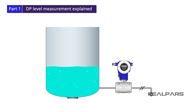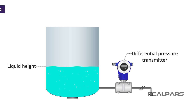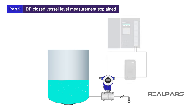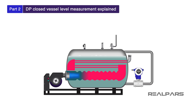In the first video of this two-part series, we introduced you to open vessel level measurement using a differential pressure transmitter. The second part of our series will take you through the process of predicting differential pressure level transmitter outputs of open vessel control loops and introduce you to closed vessel level measurement.